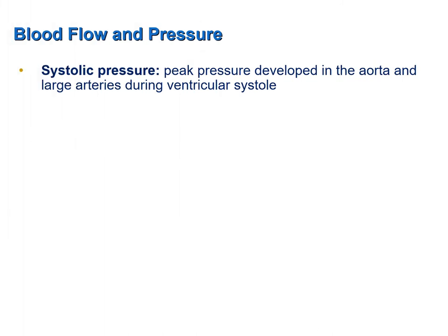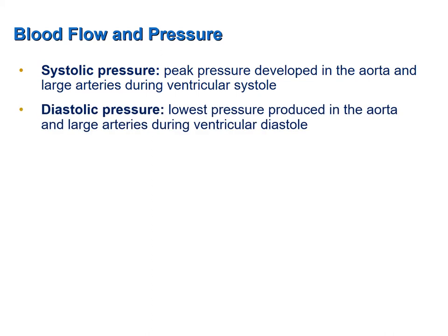Systolic pressure is the peak pressure developed in the aorta and large arteries coming off the left ventricle during ventricular systole — that is, when the ventricles are contracting. The lowest pressure produced in the aorta and the large arteries is during ventricular diastole, or when the ventricles are relaxing, and that is referred to as diastolic pressure.